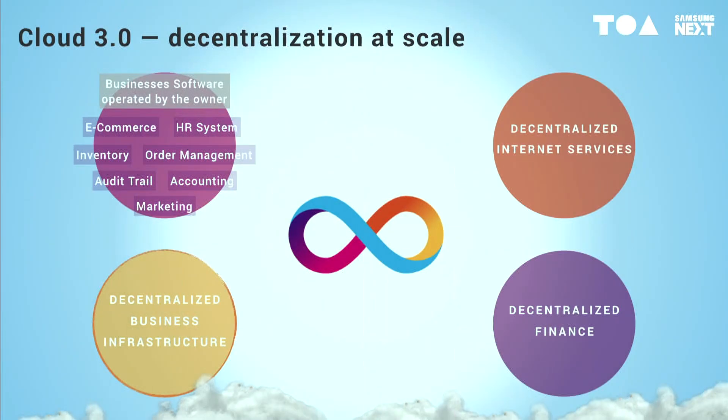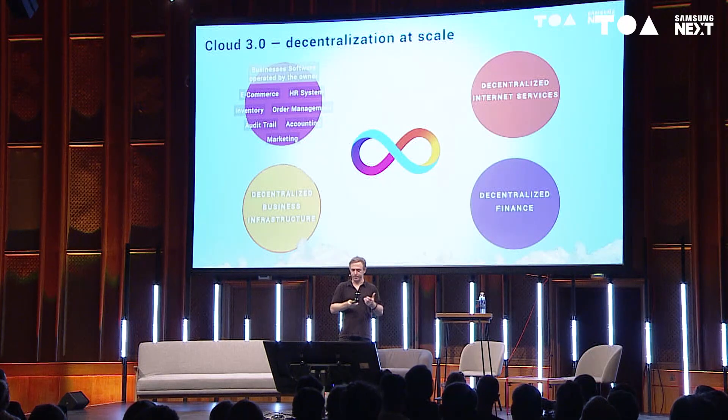We can also support decentralized business infrastructure. There are many industries that want to create shared platforms — for example, to track the movements of goods and services and allow people to get financing for invoices. Or in America, there are many different medical companies, massive medical corporations, and medical patient information is spread between them all. It would be much better to have a single open platform where patient information is stored. We can support shared industry platforms.